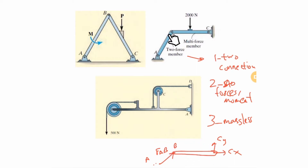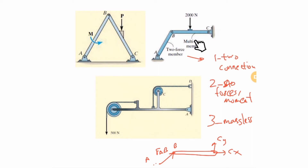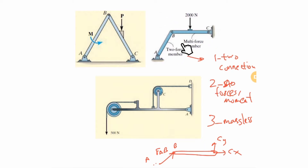If you don't identify the two-force member here, you would have two unknowns at one location and two unknowns at another, making it impossible to solve with static equilibrium equations. That's the key idea of two-force members — how they simplify problems.